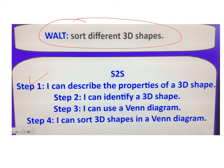Step two, I can identify a 3D shape. Well, yep, we knew a square-based pyramid and we knew a cylinder, so we can take that off. Step three, I can use a Venn diagram. Yep, I think I explained how to use a Venn diagram. Step four, I can sort 3D shapes in a Venn diagram. Yep, and we've managed to do that pretty successfully.